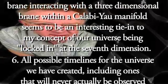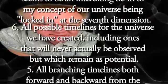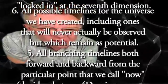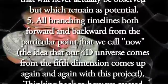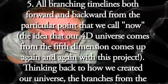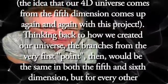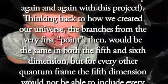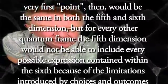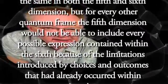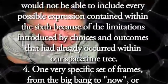Six would be all possible timelines for the universe we have created, including ones that will never actually be observed but which remain as potential. Five would be all branching timelines both forward and backward from the particular point that we call now. The idea that our 4D universe comes from the fifth dimension comes up again and again with this project. The branches from the very first point would be the same in both the fifth and sixth dimension, but for every other quantum frame, the fifth dimension would not be able to include every possible expression contained within the sixth dimension because of the limitations introduced by choices and outcomes that had already occurred within our space-time tree.